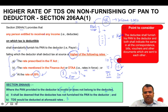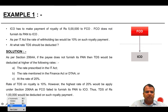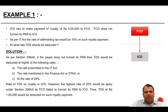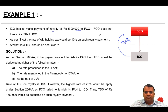The deductee shall furnish their PAN to the deductor, and both shall indicate the same in all correspondence, bills, vouchers, and other documents sent to each other. Let's look at an example to clarify this further. ICO has made a payment of royalty of Rs. 5 lakh to FCO. This Indian company has paid royalty to FCO. FCO does not furnish its PAN to ICO, and the rate of withholding is 10% on such payment. At what rate should the TDS be deducted?